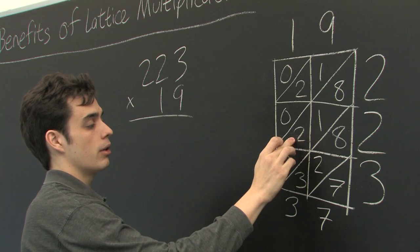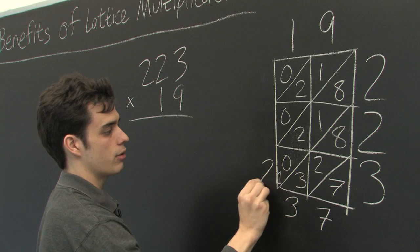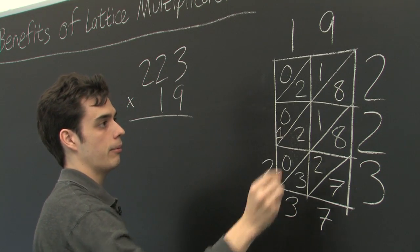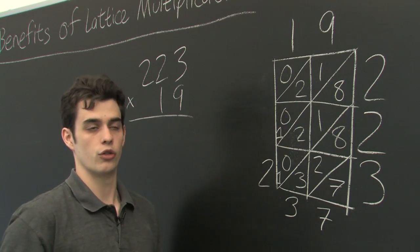8 plus 2 is 10 plus 1 is 11 plus 2 is 12. We'll write a 2 here and carry the 1 again. Then 1 plus 2 plus 1 is 4.